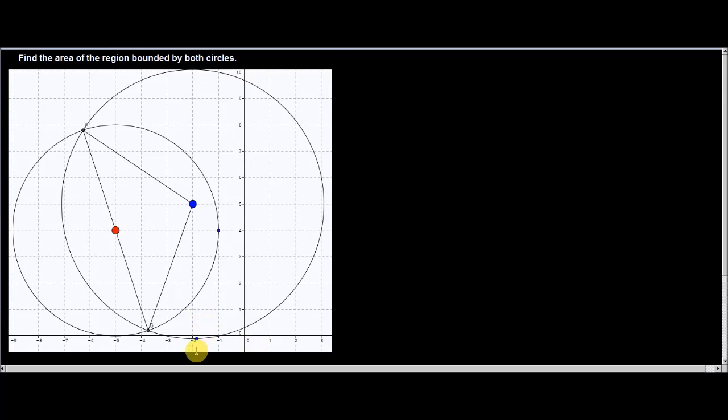The first step is to find the centers. The blue one has a radius of the root of 5 squared plus 1 squared, which is root 26, the exact answer. For the red one, the radius is 4.